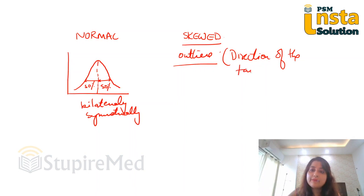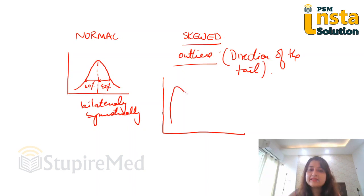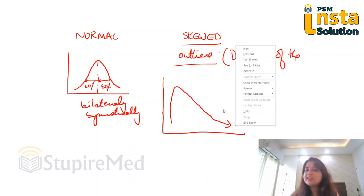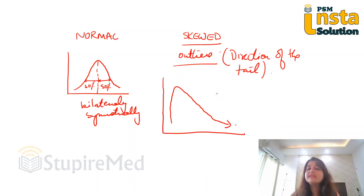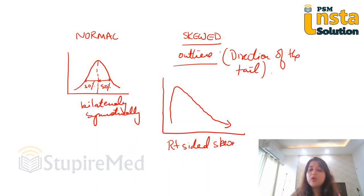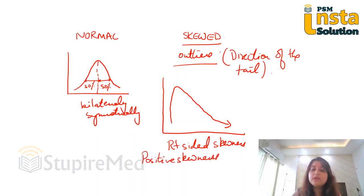So I am going to draw two figures. Look at this figure. If it is like this, where is my direction of the tail pointing to? Towards the right side. So this becomes a right-sided skewness, or it becomes a positive skewness. Please remember this — your data is being pulled to the right side.